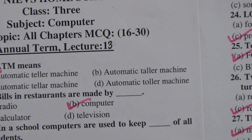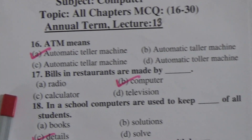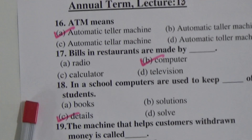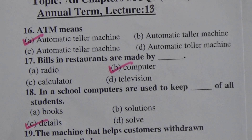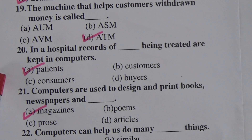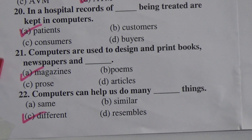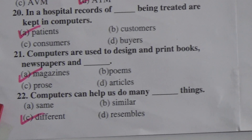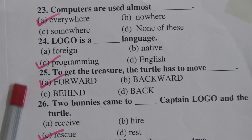Let me repeat for the last time. Question 16: ATM means Automatic Teller Machine. Question 17: Bills in restaurants are made by computer. Question 18: In a school, computers are used to keep details of all students. Question 19: The machine that helps customers withdraw money is called ATM. Question 20: In a hospital, records of patients being treated are kept in computers. Question 21: Computers are used to design and print books, newspapers, and magazines. Question 22: Computers can help us do many different things. Question 23: Computers are used almost everywhere. Question 24: Logo is a programming language.